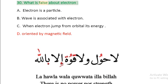Question 30: What is false about electron? A. Electron is a particle, B. Wave is associated with electron, C. When electron jumps from orbital its energy changes, D. Oriented by magnetic field.